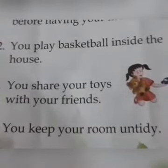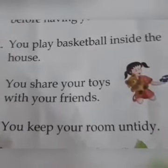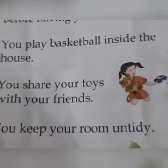Let's read the second sentence: you play basketball inside the house. Is basketball played inside the house? This girl is playing basketball inside the house and breaking all the things in the house, like the vase. Is it a good thing? No, it's a bad manner. So we are going to draw a frowning face — the eyes and the lips are turned downwards into a frown. Done.